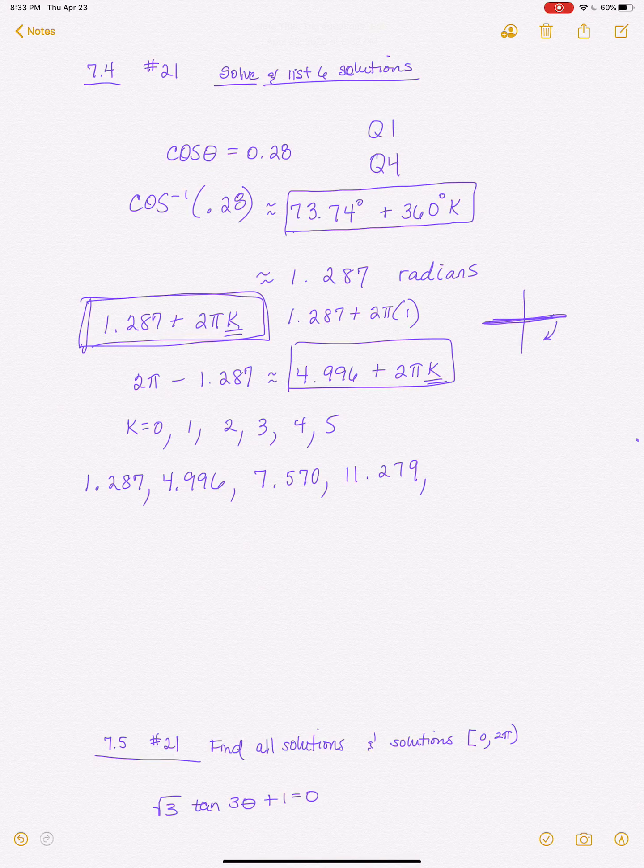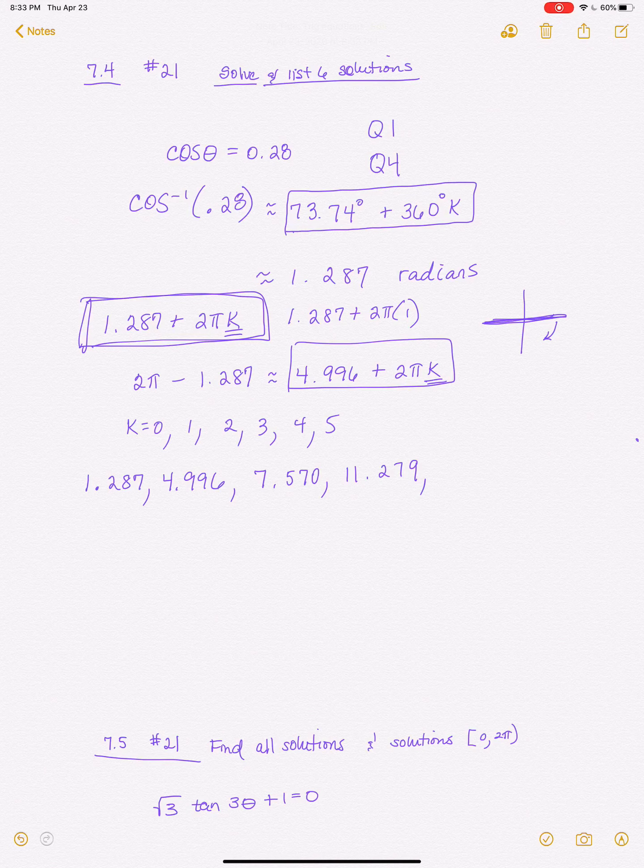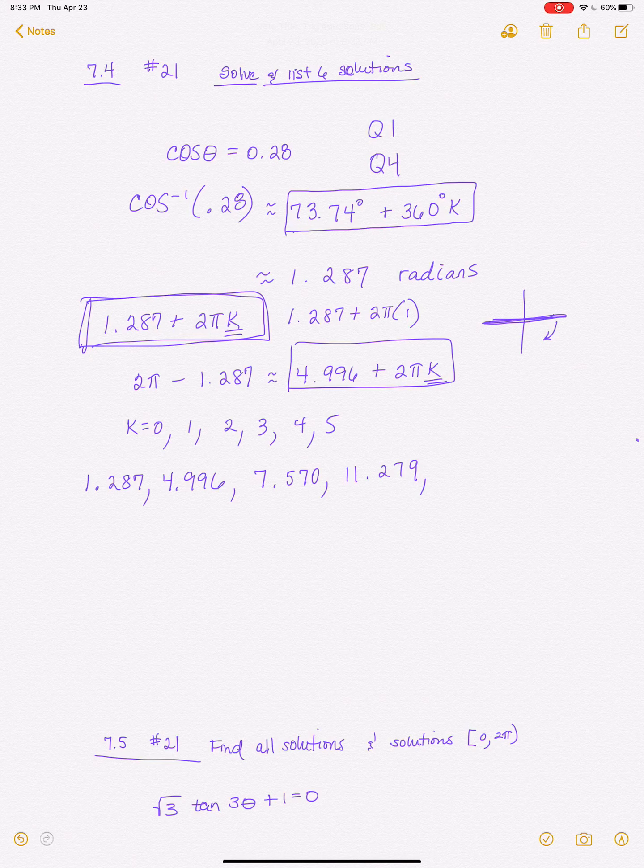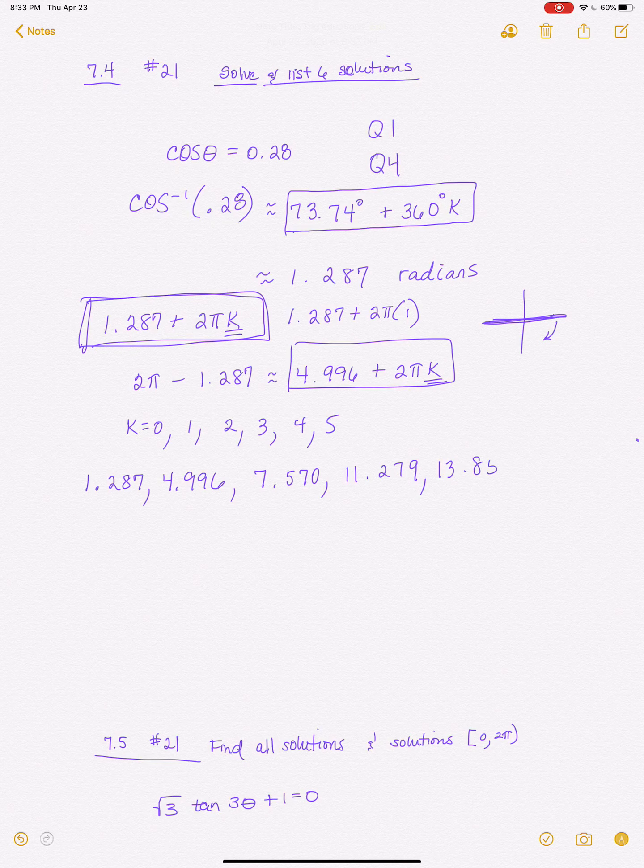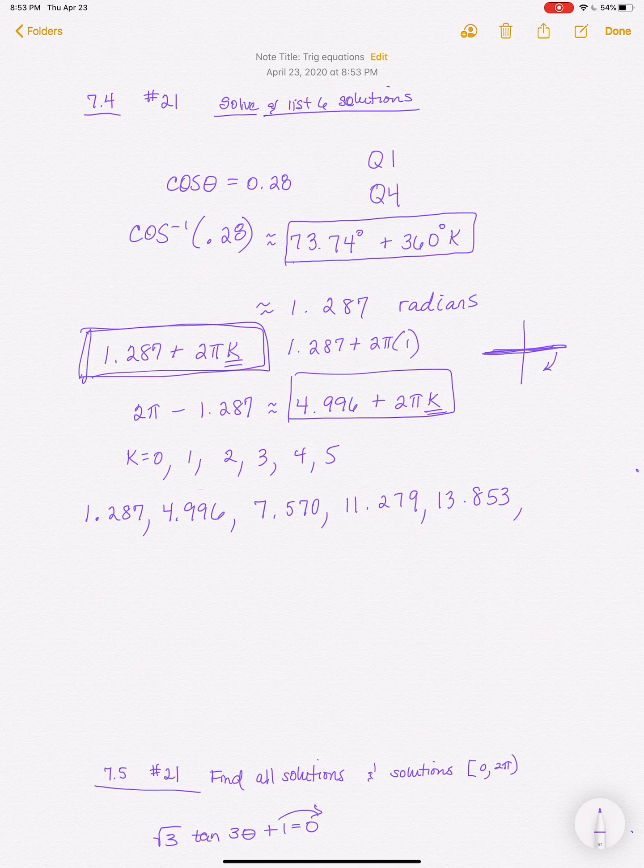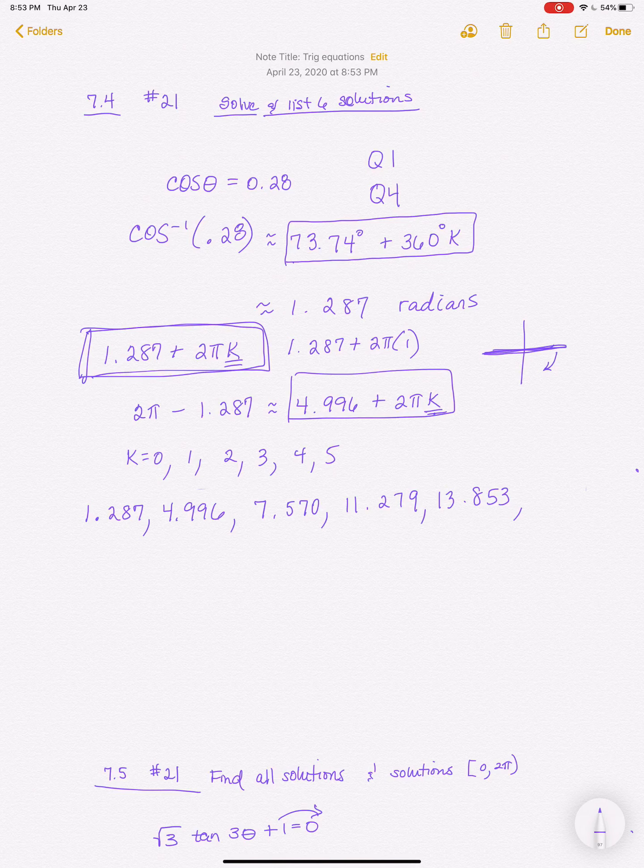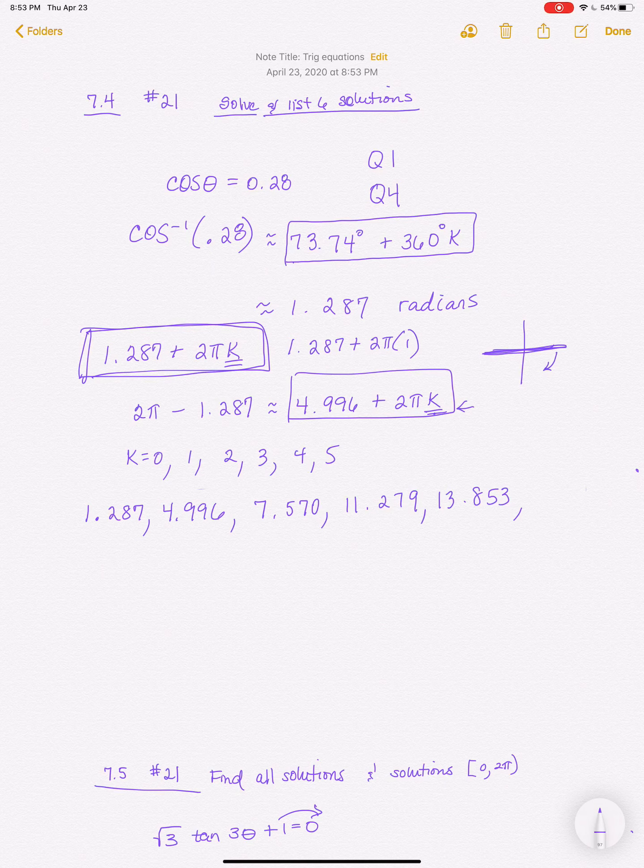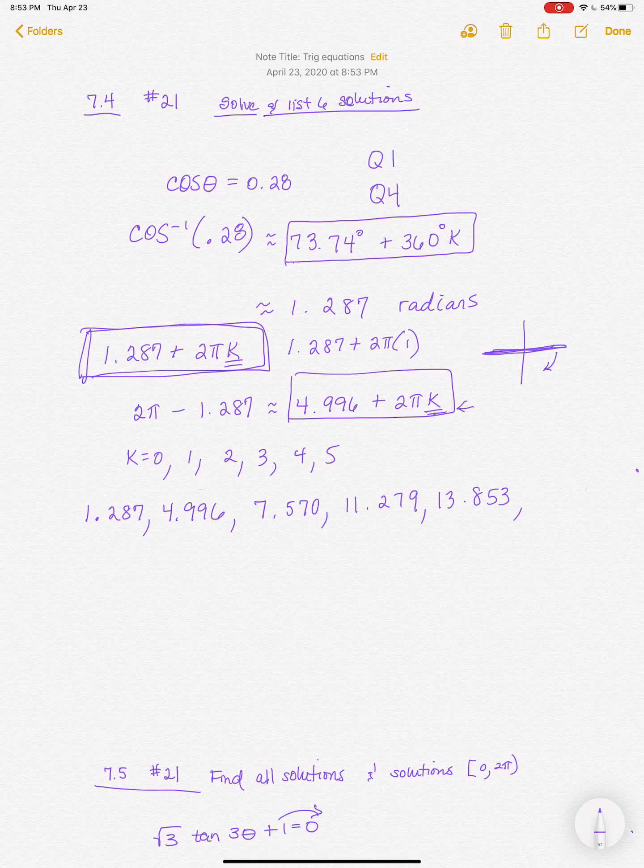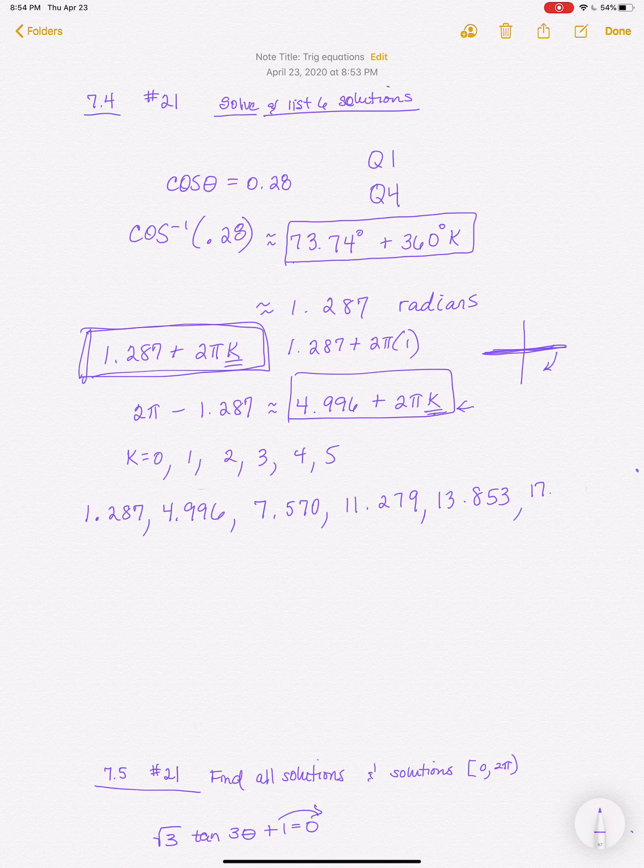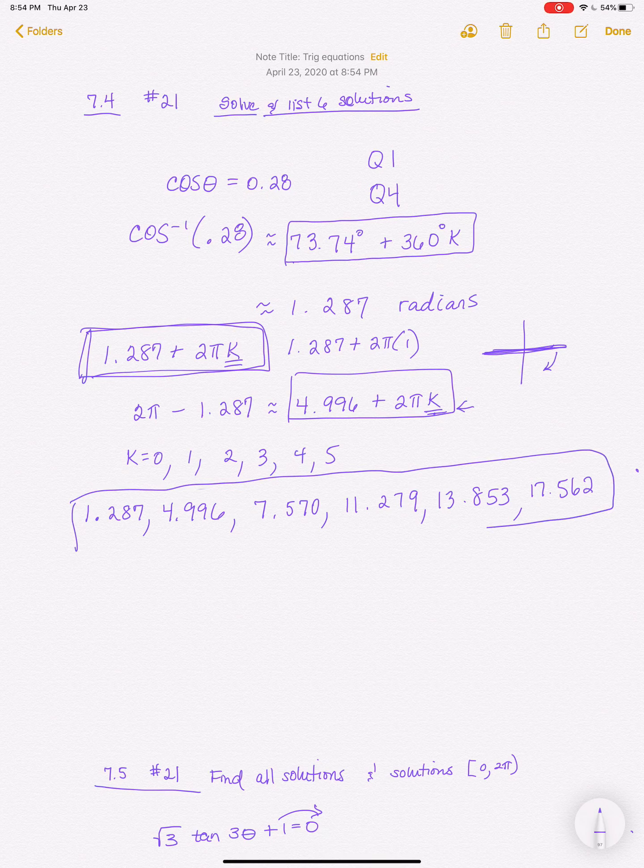And then if I plug in 2 for K, I get 13.853. And then when I plug in my last value – so I'm going to plug in 2 into this second equation. So I've got 2 times pi times K or 4 pi plus 4.996, which is 17.562. And so those are my 6 solutions.